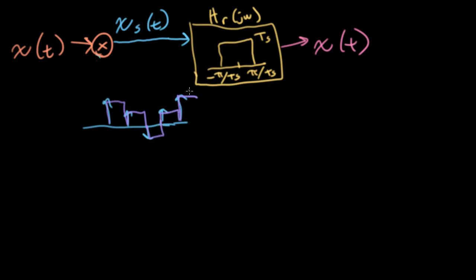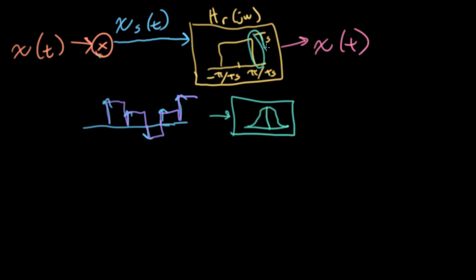And then usually what you would do is put it through a low-pass filter, but that low-pass filter wouldn't necessarily need to be as steep or as aggressive as the brick-wall filter we have here, because all it really needs to do is just smooth out these edges.